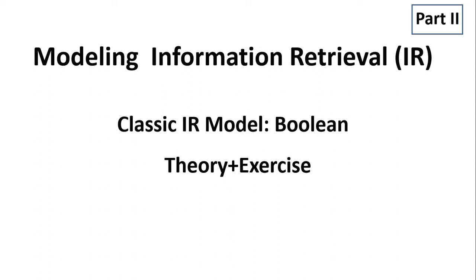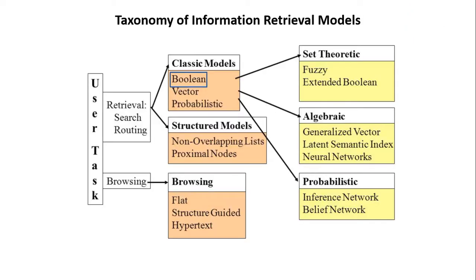Welcome to my channel. The topic is modeling information retrieval. In this video I am going to cover the classical IR model, that is the Boolean model. Exercises are covered in my previous video, where I covered formal characterization of IR models, which is important to understand this video. This is a taxonomy of information retrieval models. In the classical model, three methods are there: Boolean, vector, and probabilistic.